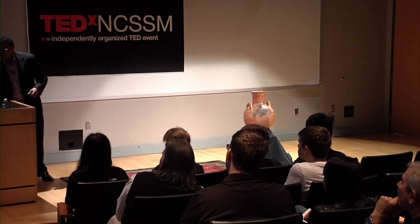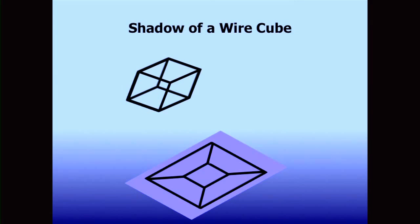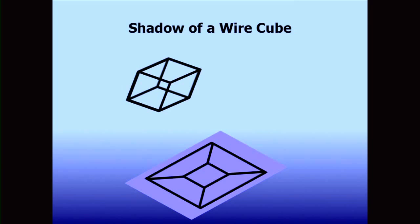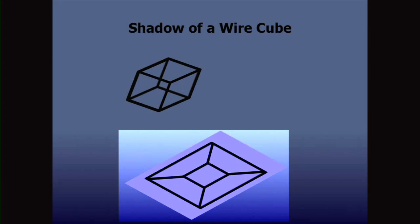Let us begin by taking a look at issues that relate to a higher-dimensional object. We have a wire cube, and we're going to shine light on it. What you're seeing below is a shadow of that wire cube — but not just an ordinary shadow. It's a special one that captures the extra properties of the full object. If you count the vertices in this cube, you'll see the number of vertices in that shadow. If you count the edges in that cube, you will see the exact number. In fact, this shadow has a name: it's called a Schlegel diagram.